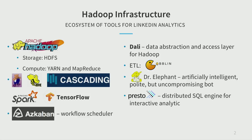Our analytics ecosystem is based on Hadoop core, which consists of storage — HDFS — and compute — YARN and MapReduce. We run standard Hadoop stack tools including Pig, Hive, and Cascading. Our Spark usage is growing extensively. We've started using TensorFlow for machine learning. Azkaban is our workflow scheduler. We have a lot of ETL mostly based on the open source project Goblin, and an internal tool called DALI — a data abstraction and access layer for Hadoop. We actively use Dr. Elephant for analyzing Hadoop jobs, and Presto as a distributed SQL engine.